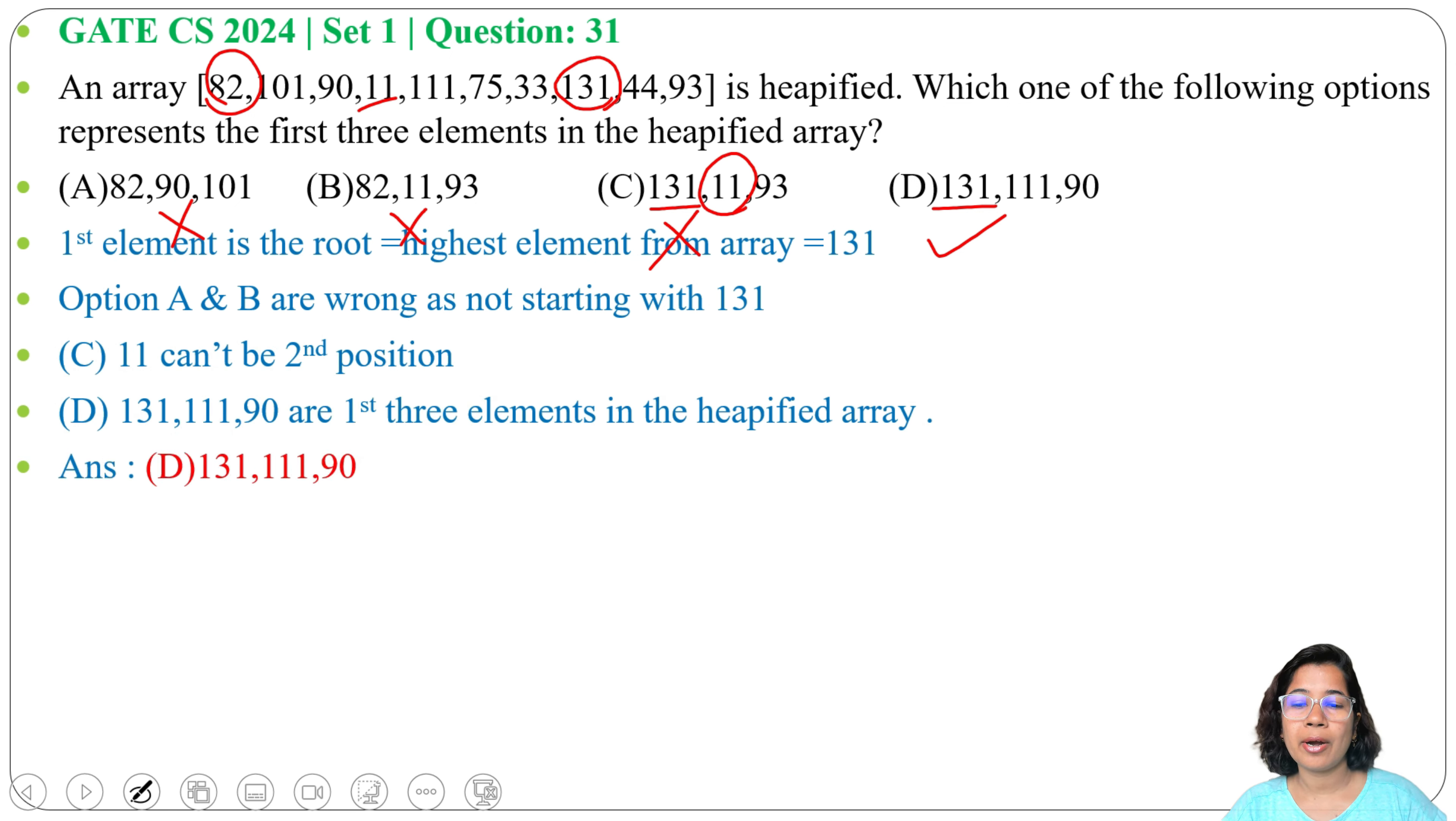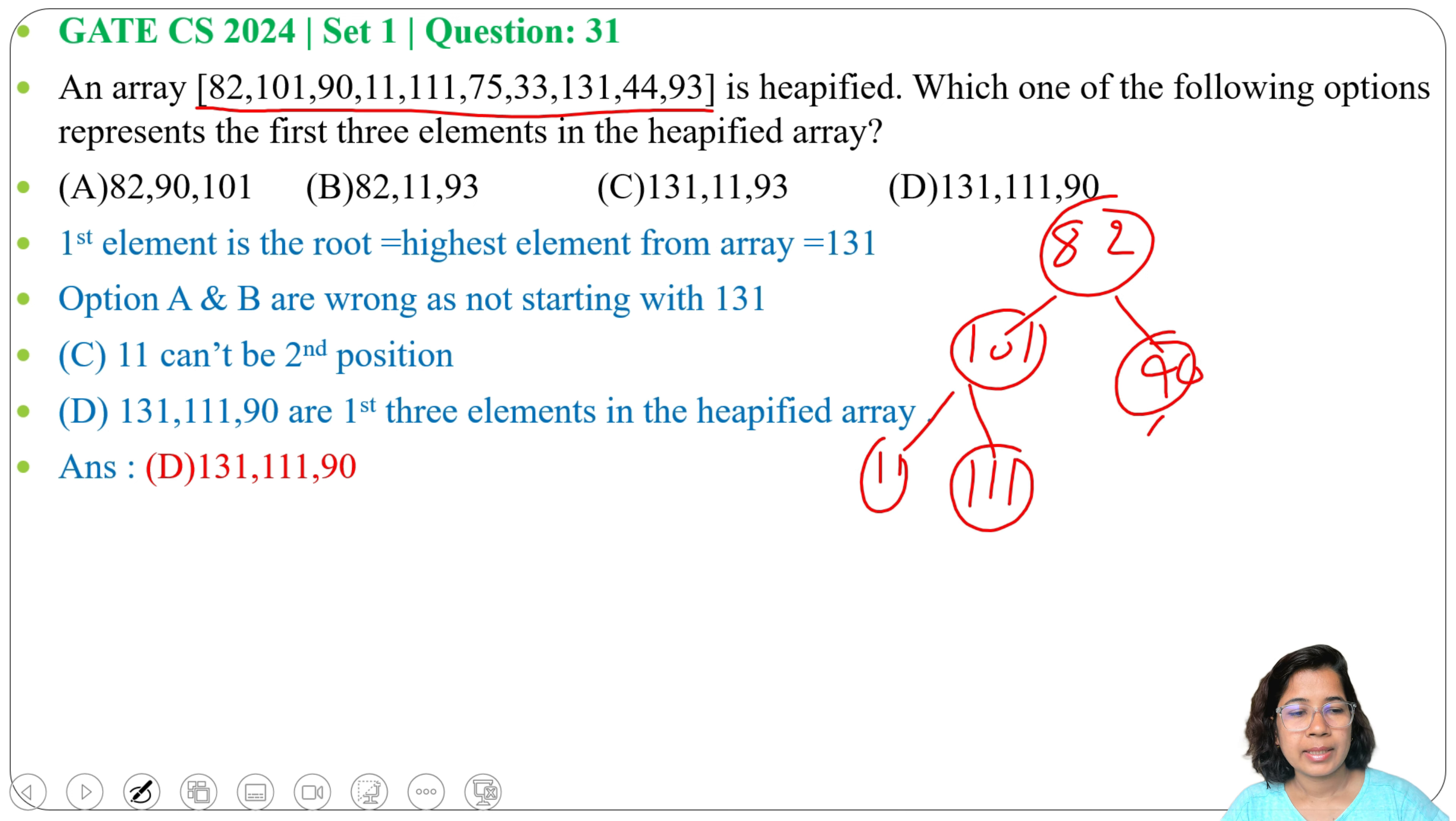You don't need to really create the max heap for this array - by just using your logic you can easily solve this question. Answer is option D. If you want to create the max heap, most welcome. The original tree has 82, 101, then 90, then 11, 111, 75, 33, 131, 44, 93.